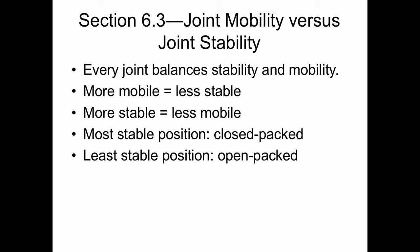Every joint balances stability and mobility. They are either more mobile and less stable, or more stable and less mobile. Their most stable position is described as the closed-packed position, and their least stable position is described as the open-packed position. Mobility and stability are antagonistic concepts — more of one means less of the other. In a closed-packed position, the bones in a joint are maximally congruent, or very stable.